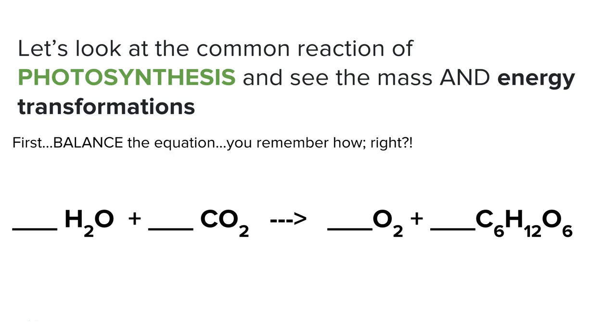Let's first look at the common reaction of photosynthesis. Let's look at the mass being conserved and the energy being conserved despite the transformations. First, let's see if you can remember how to balance the equation. To have photosynthesis happen you need water and carbon dioxide. And then the plant uses light energy to change that into oxygen and glucose, C6H12O6.